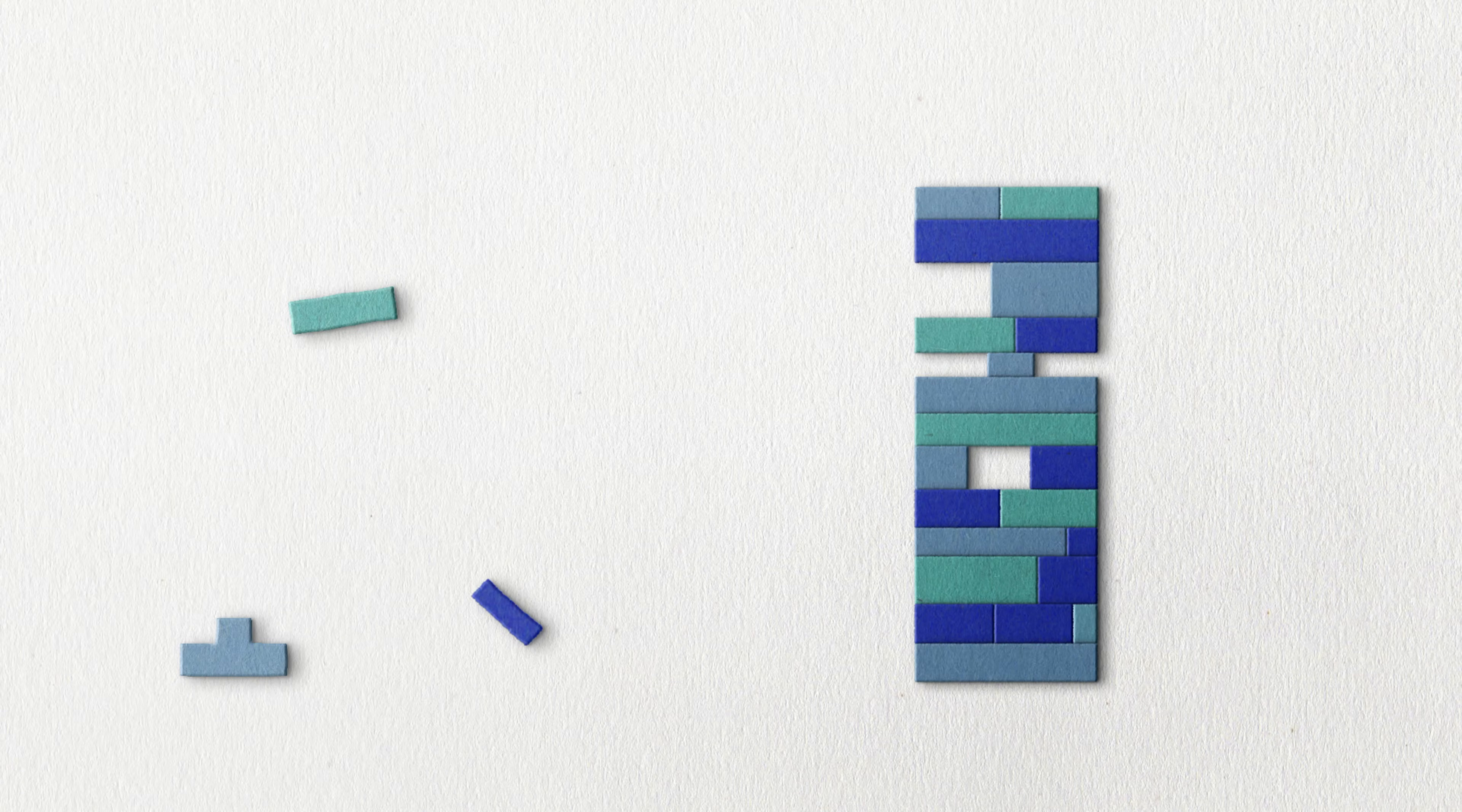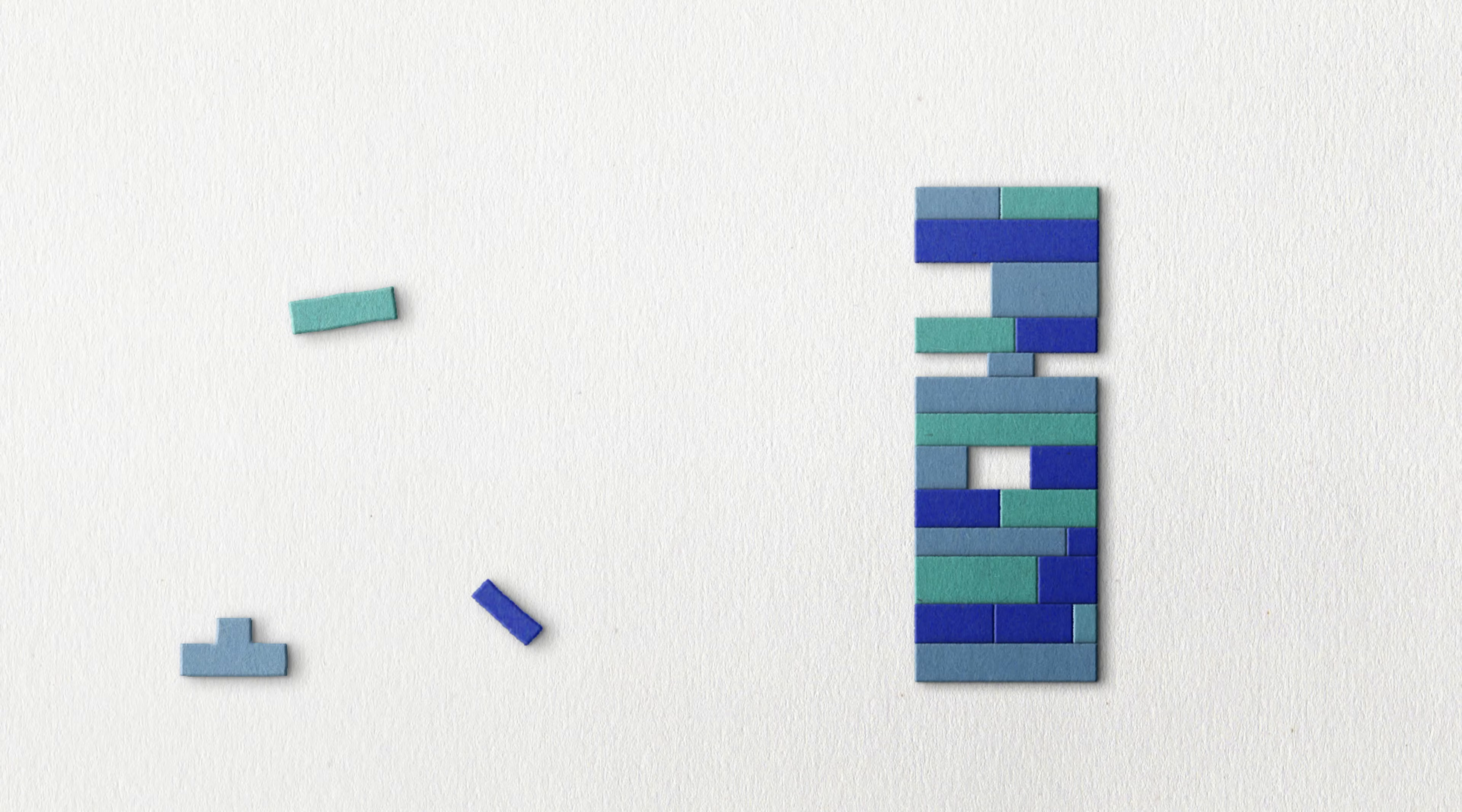Imagine each category of molecules as a box set of Legos made of many pieces or monomers that can come together to form one major structure or a polymer.